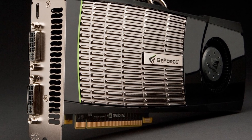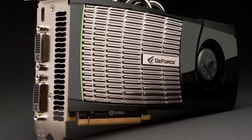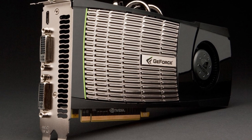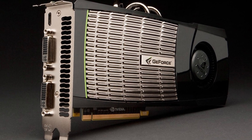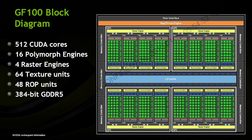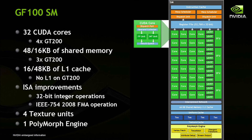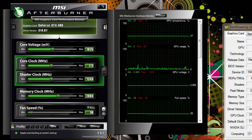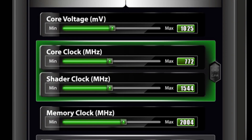Fermi succeeded the Tesla microarchitecture in 2010 and entered the market with its flagship product, the GeForce GTX 480. Fermi moves from stream processors to streaming multiprocessors. Within the SMs, different units still operate on different clocks — some on the core clock and others on the shader clock. However, the two clocks were hard linked, as the shader clock ran at twice the speed of the core clock.